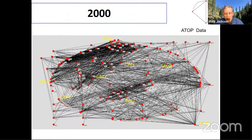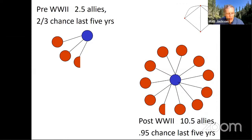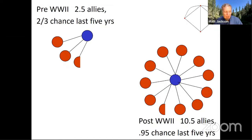Before World War Two, countries on average had about two and a half allies and there was a two-thirds chance they would still have a treaty with that country five years later. Post-World War Two, you get about 10 and a half allies and about a 95% chance that they last five years. So it becomes a much denser network, and the relationships that are there are much steadier.